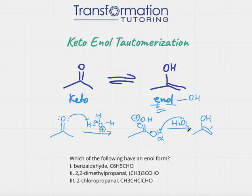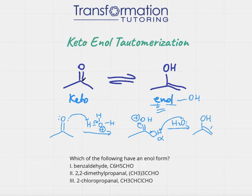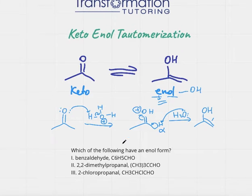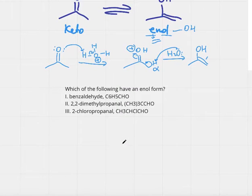We also have a mechanism on how to go back, and I will cover that in another video. But for now let's summarize: there is an equilibrium between the keto and enol form. The keto form is when we have C double bond O, and the enol form is when we have a carbon with OH next to a double bond. Now let's go ahead and look at a question.